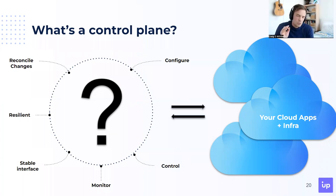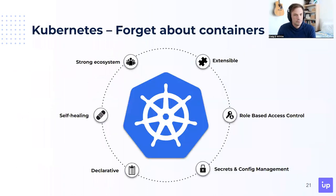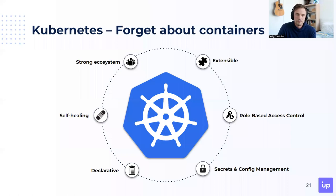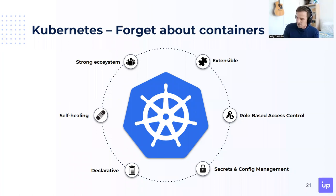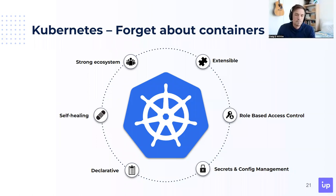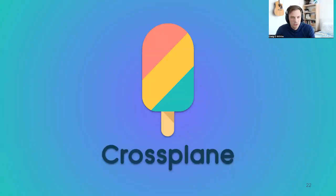As you listen to that definition, you might think: that sounds like Kubernetes. It does that for containers — but forget about containers for a moment. Kubernetes is a control plane, and it has a lot of useful features beyond container management. It's extensible, it has secrets and configuration management, it's declarative, it's self-healing, and it has a very strong ecosystem around it. Going back to the CNCF survey, there is very strong adoption of Kubernetes. So: you need a control plane, Kubernetes does containers — what do we do? That's where Crossplane comes into the picture.